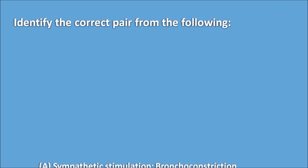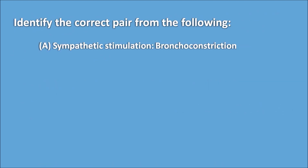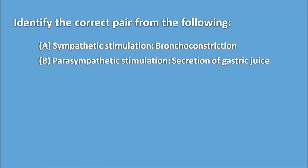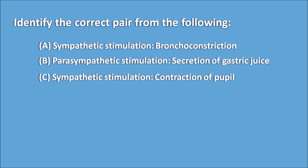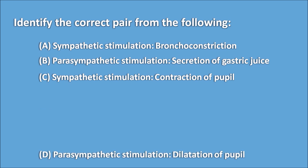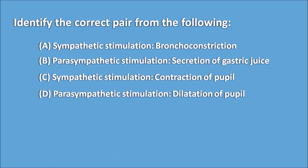Identify the correct pair from the following: A: sympathetic stimulation and bronchoconstriction; B: parasympathetic stimulation and secretion of gastric juice; C: sympathetic stimulation and contraction of pupil; D: parasympathetic stimulation and dilatation of the pupil.